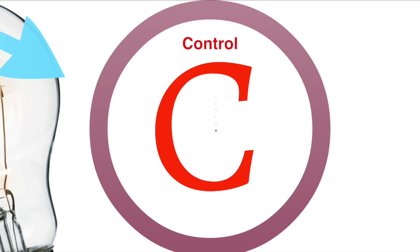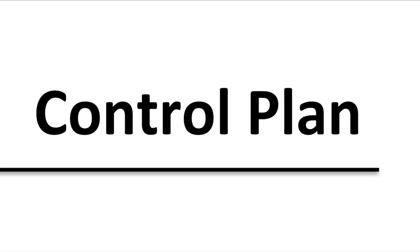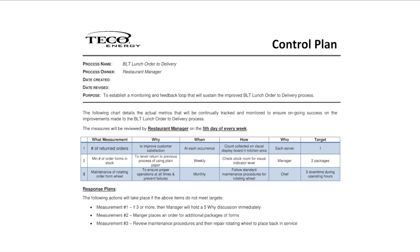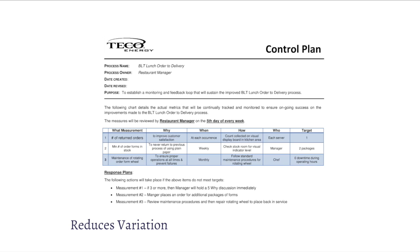Let's see how we can control process improvements. The best way to control any process is through a control plan. It's the main tool we use in this phase. Control plans establish expectations and procedures on how improvements will be monitored and maintained. They help to reduce variation in the process and ensure consistent quality is delivered to the customer.